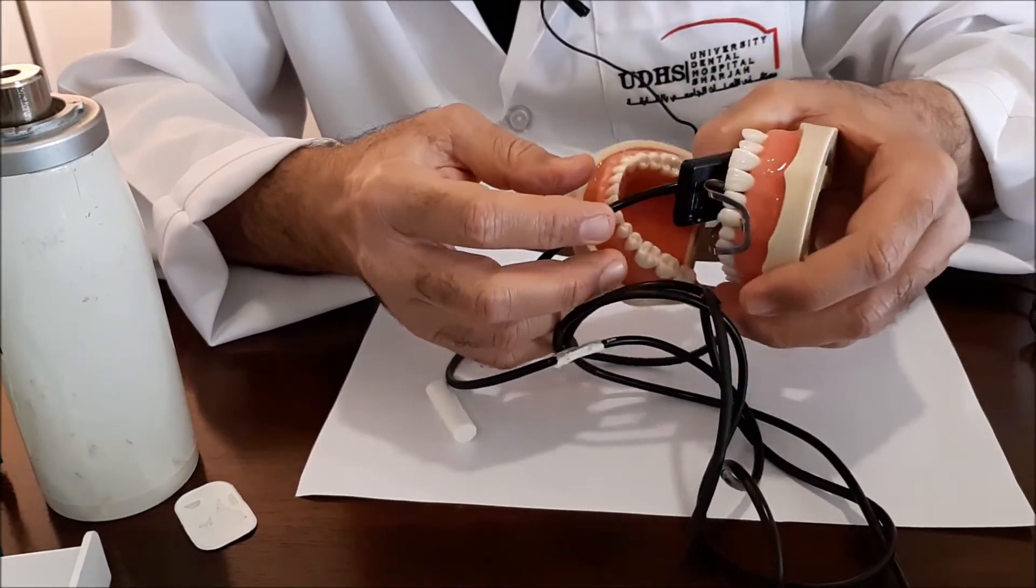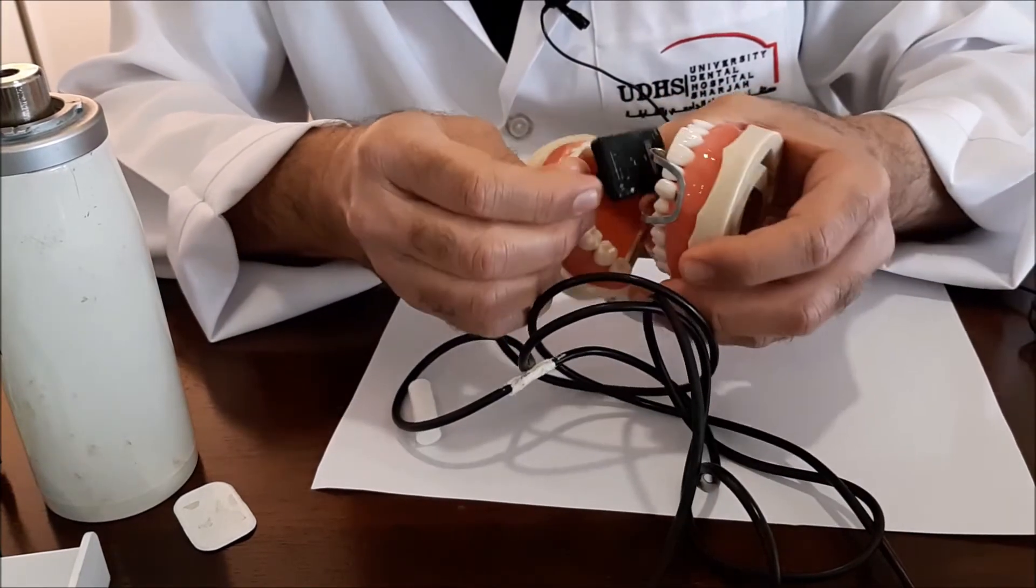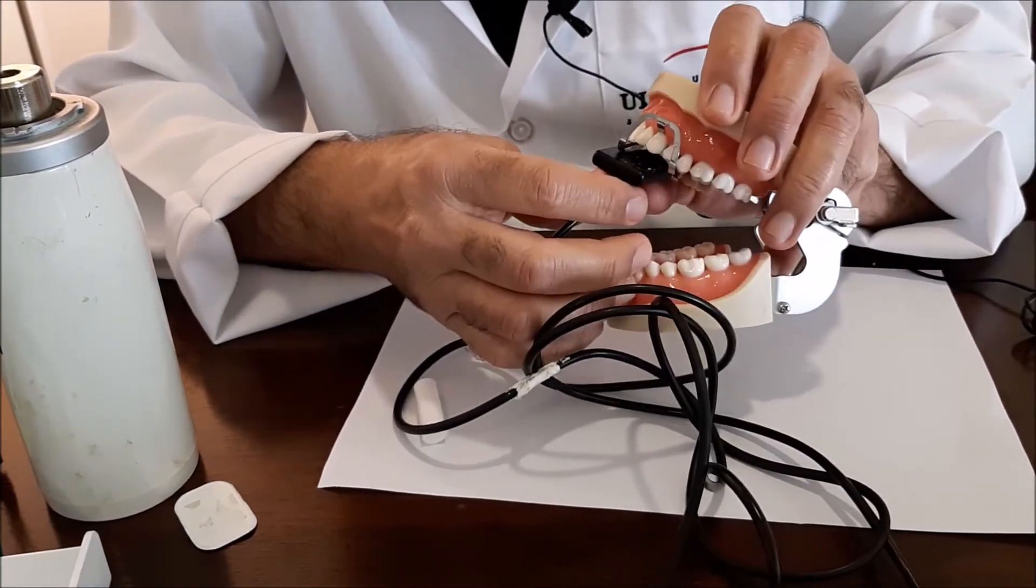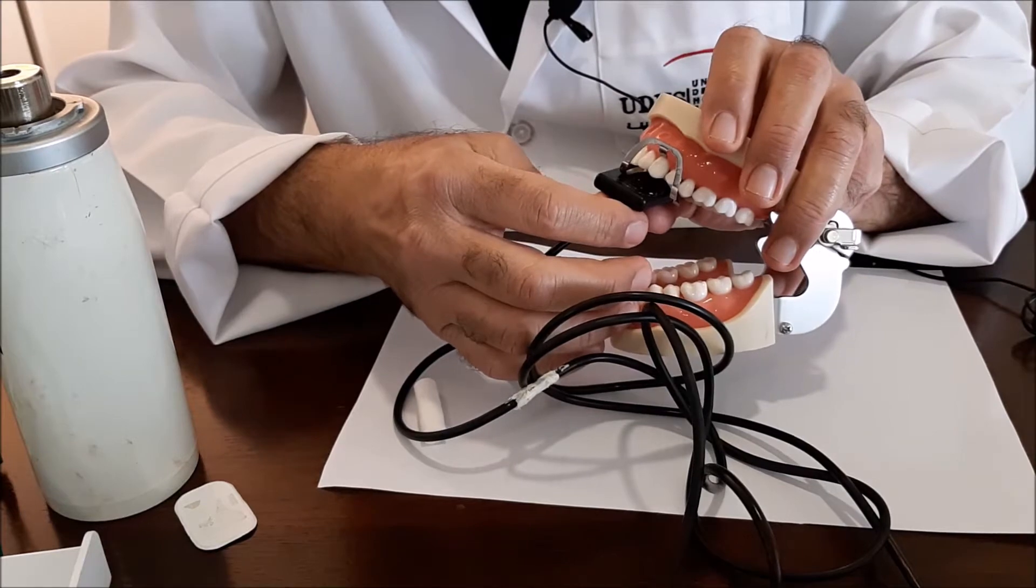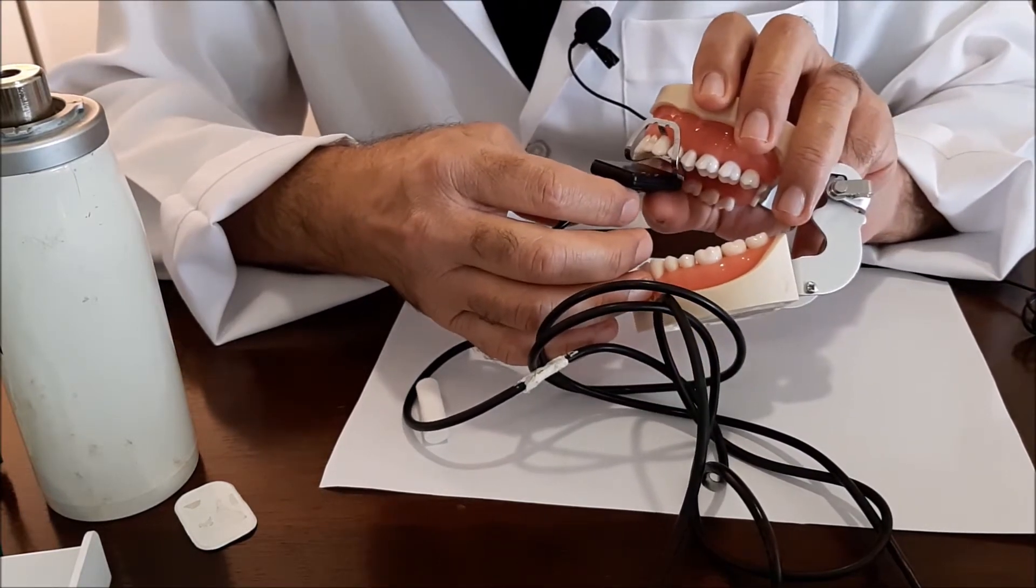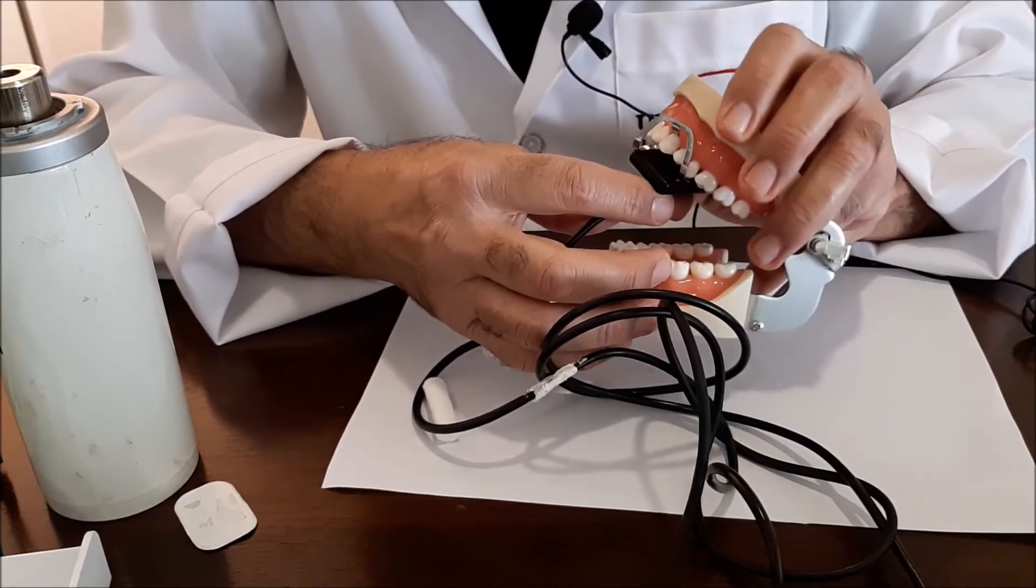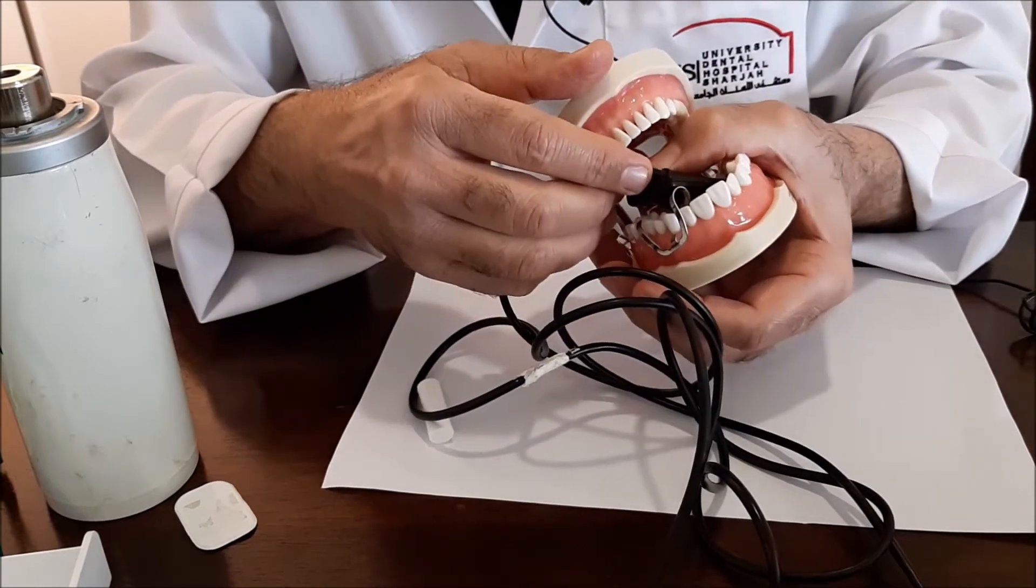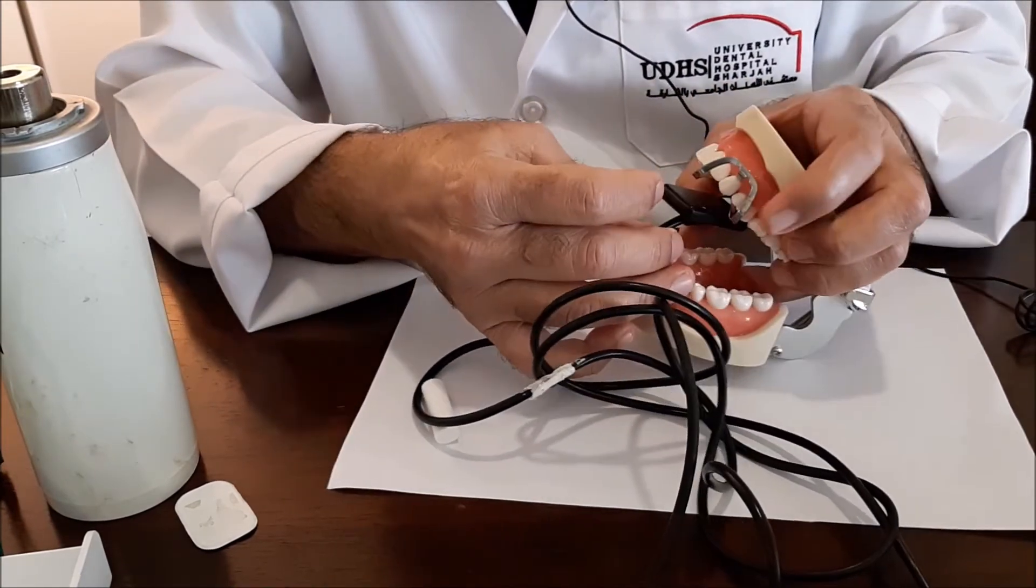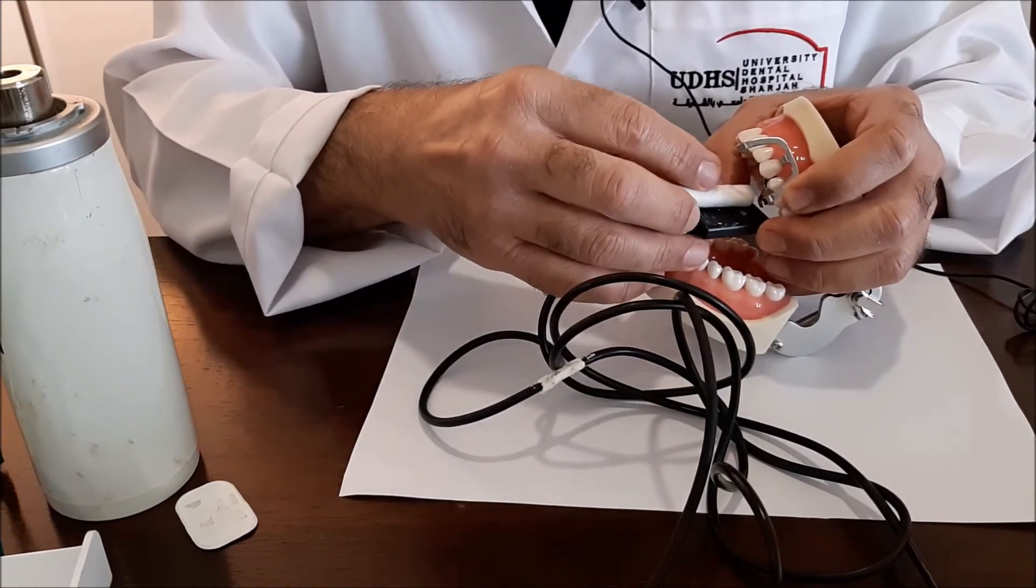If you fail to do so and place the sensor in this way, definitely you will miss the root. So you push as much as you can backwards, and preferably you use the cotton roll.